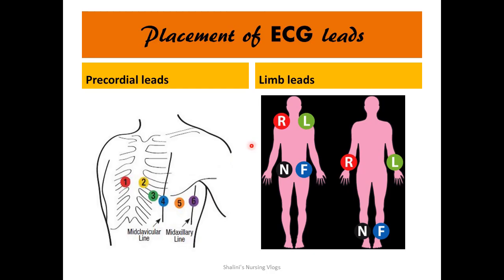When taking an ECG, placement of leads is very important. There are precordial leads placed on the chest, labeled V1 through V6. V1 is on the right sternal border at the 4th intercostal space; V2 on the left sternal border at the 4th intercostal space; V3 between V2 and V4; V4 at the mid-clavicular line at the 5th intercostal space; V5 on the anterior axillary line at the 5th intercostal space; and V6 on the mid-axillary line at the 5th intercostal space.